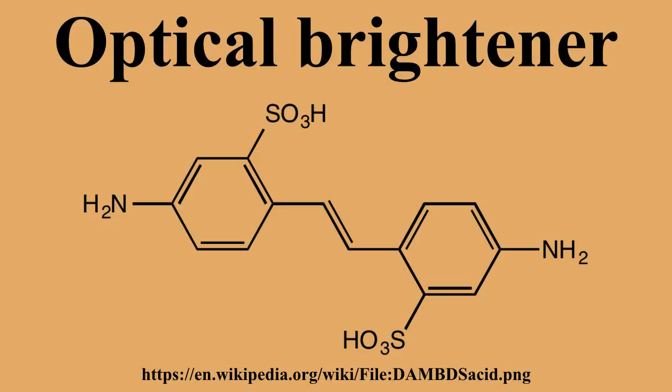Optical Brighteners, also called Optical Brightening Agents, Fluorescent Brightening Agents, or Fluorescent Whitening Agents, are chemical compounds that absorb light in the ultraviolet and violet region of the electromagnetic spectrum and re-emit light in the blue region by fluorescence. Fluorescent emission is a short-lived period of light emission, unlike phosphorescence which is long-lived. These additives are often used to enhance the appearance of color of fabric and paper, causing a whitening effect, compensating the deficit in blue and purple light with fluorescent emission.